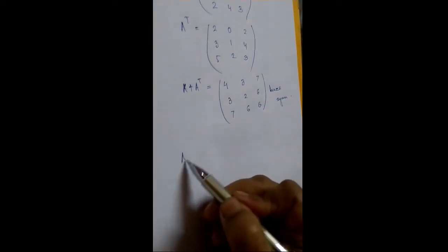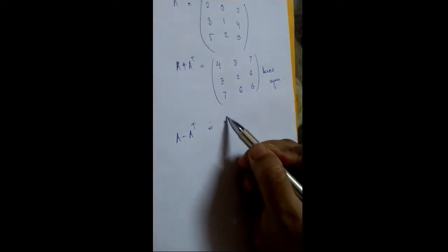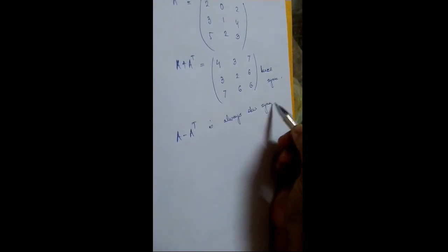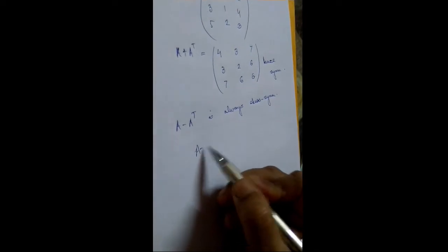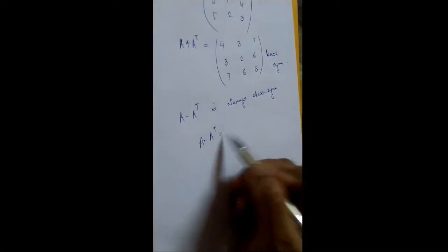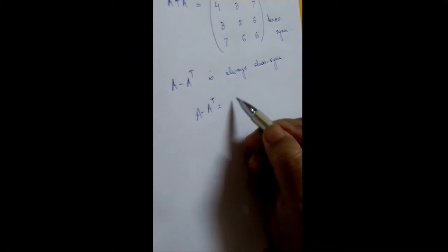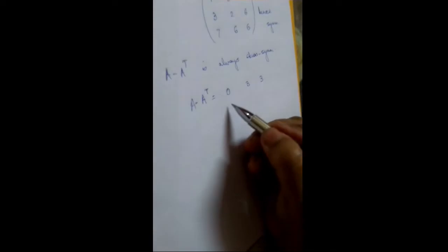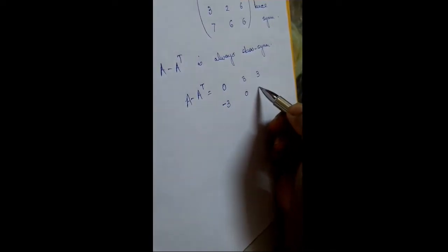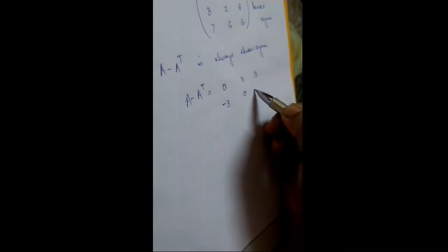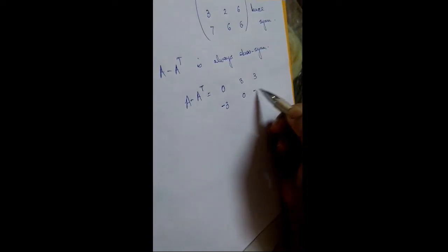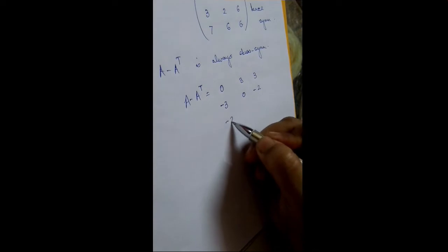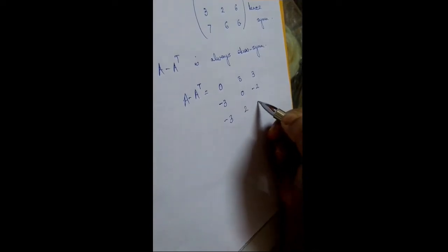It was also told to you that A minus A transposed is always skew symmetric. Now let us find A minus A transposed. A minus A transposed is obtained by subtracting the corresponding elements of A and A transposed. So the elements are: 0, 3, 3; minus 3, 0, 2 minus 4 which is minus 2; minus 3, 2, 0.